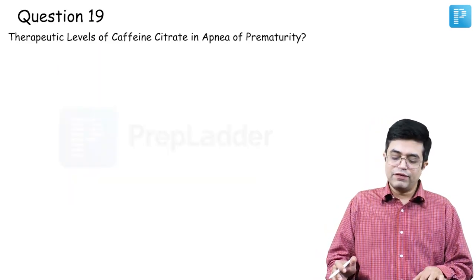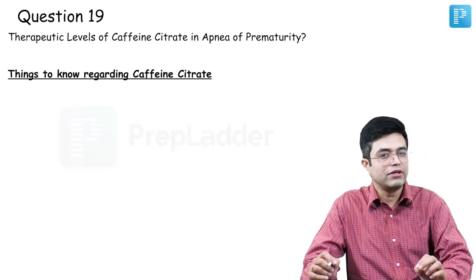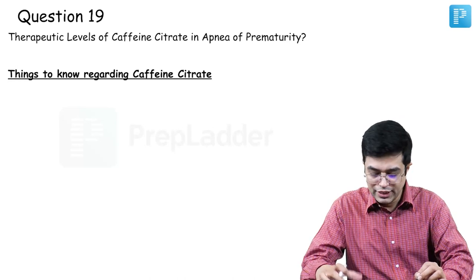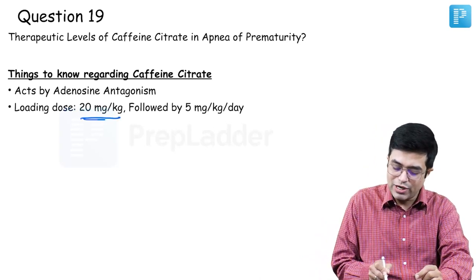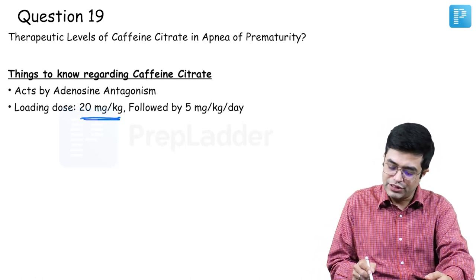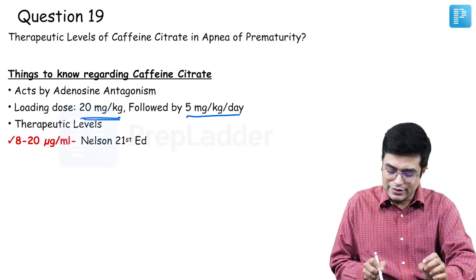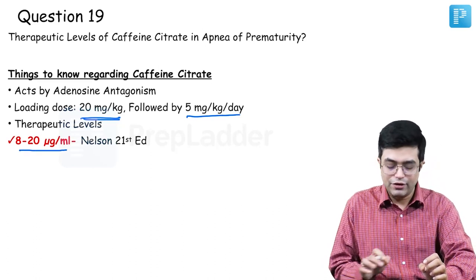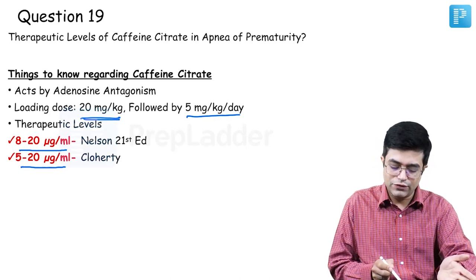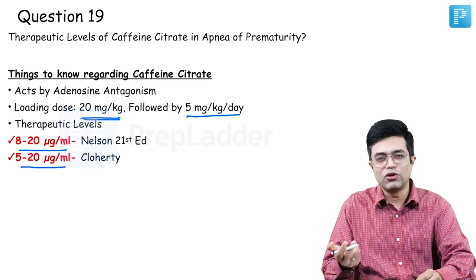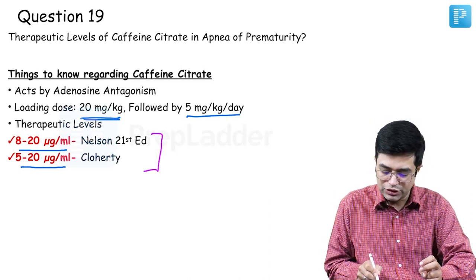Question number nineteen: therapeutic levels of caffeine citrate in apnea of prematurity. Caffeine citrate is the drug of choice for maintenance therapy in apnea of prematurity — it acts by adenosine antagonism. Loading dose is 20 mg/kg; 24 hours later, maintenance dose of 5 mg/kg/day. Therapeutic levels: Nelson gives 8–20 mcg/ml; Cloherty gives 5–20 mcg/ml. The upper cutoff is the same in both; lower cutoff is 8 per Nelson and 5 per Cloherty. Mark whichever is the closest option available.